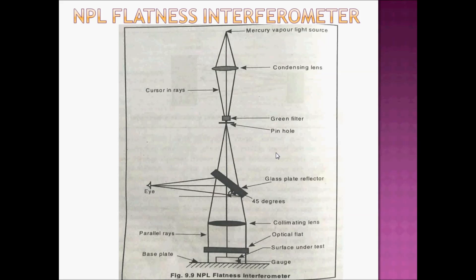There are two instruments. First, NPL flatness interferometer. In this interferometer we can check the flatness using this instrument. NPL is the National Physical Laboratory. We compare the optical flat surface to the work piece. The main parts are: Mercury vapor light source, condense lens, gauge, projection optics, compressing lenses, optical flat, and light.